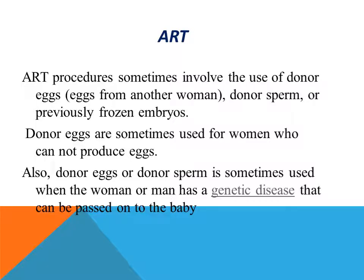Donor eggs or donor sperm and previously frozen embryos can be used in ART procedures. Even sperms can be stored in frozen conditions. This is sometimes used when the woman or man has a genetic disorder and there is a chance it can be passed to the baby — in that case, donor sperm or donor eggs are used.